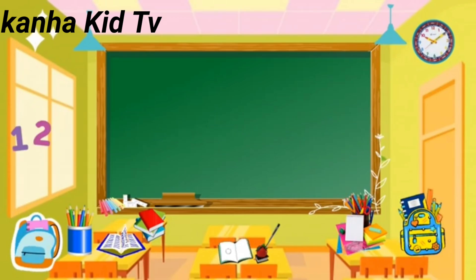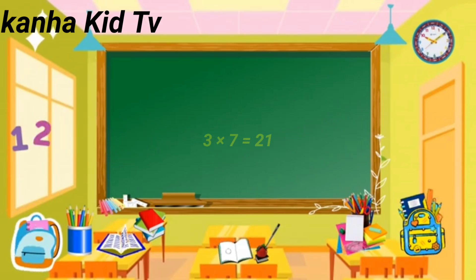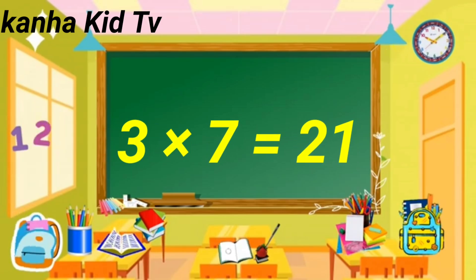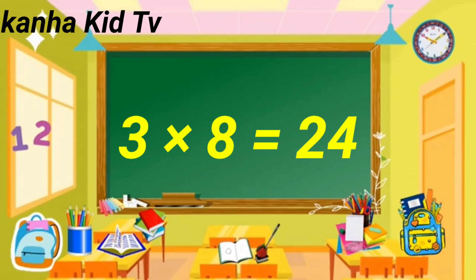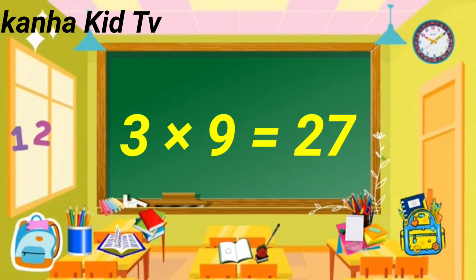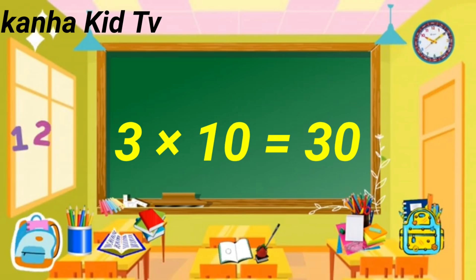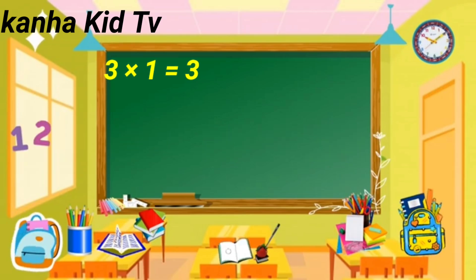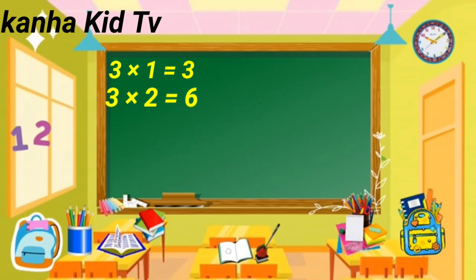Three fives are fifteen. Three sixes are eighteen. Three sevens are twenty-one. Three eights are twenty-four. Three nines are twenty-seven. Three tens are thirty. Three ones are three. Three twos are six.